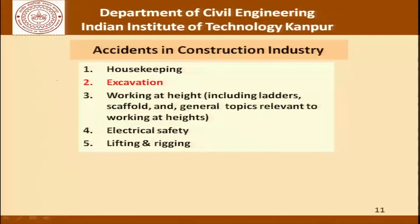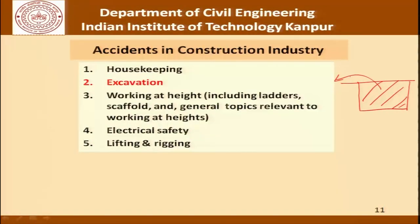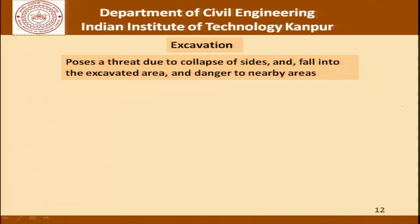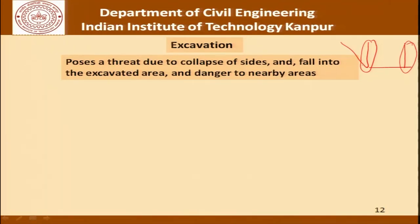Moving on to excavation — excavation means removing a part of the ground and depositing that earth somewhere. Issues related to construction safety concerning excavation include collapse of sites, fall into the excavated area, and danger to nearby areas. Whether the sides of an excavation should be vertical or have a slope depends on the type of soil, depth of excavation, whether the soil is wet or dry, and the groundwater table.